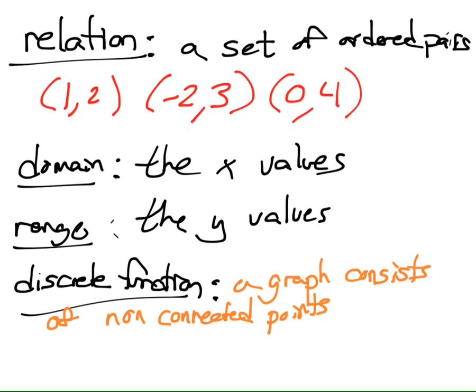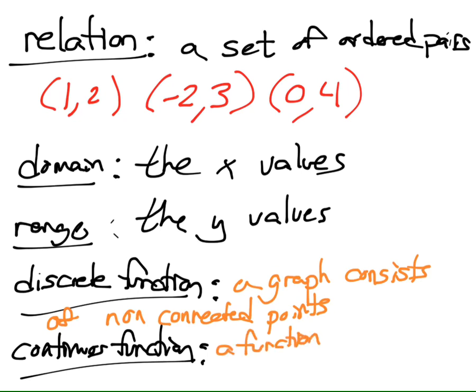And then we have kind of the opposite of that. Continuous function is a function connected by a line or a curve. So in a minute, we're going to be talking about all continuous functions, but then I'm going to show you some examples on your assignment of discrete functions. And you'll have to identify, is this discrete or is this continuous? It says a function connected by a line or curve is a continuous function.